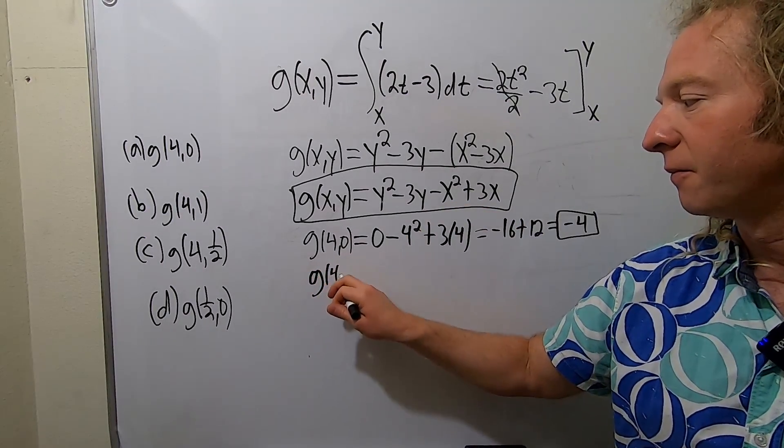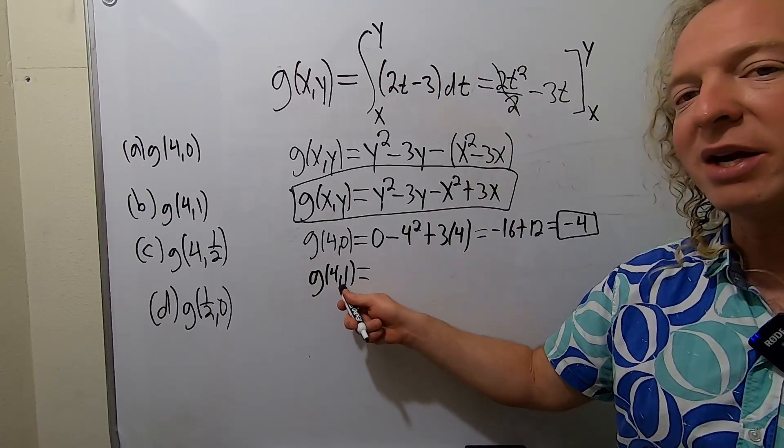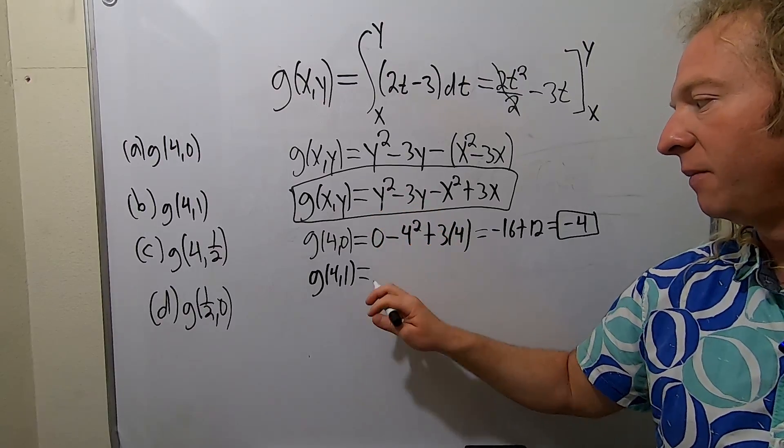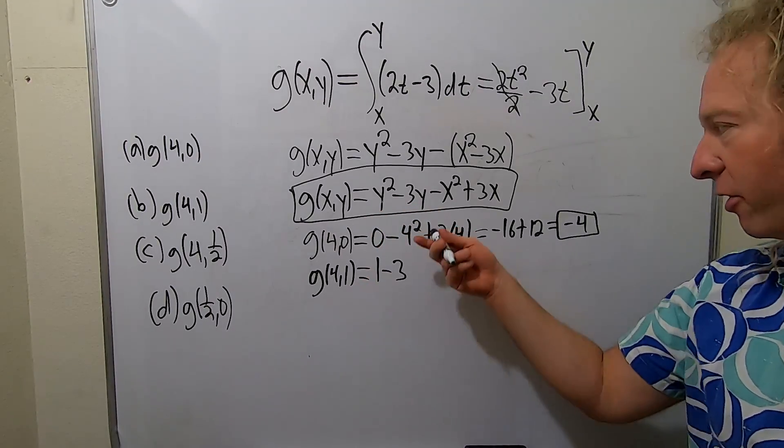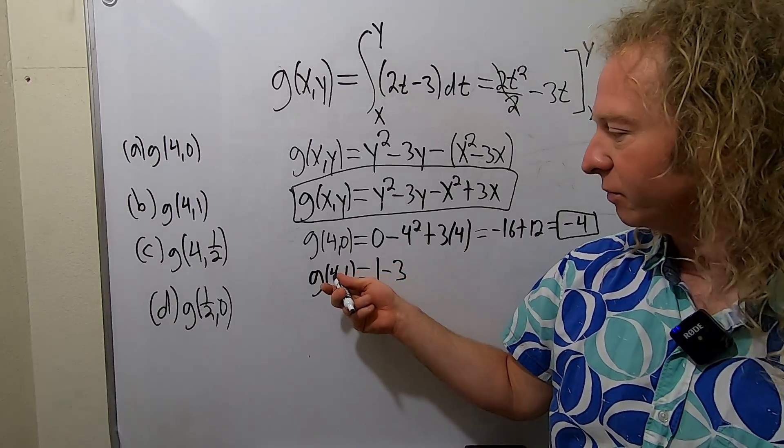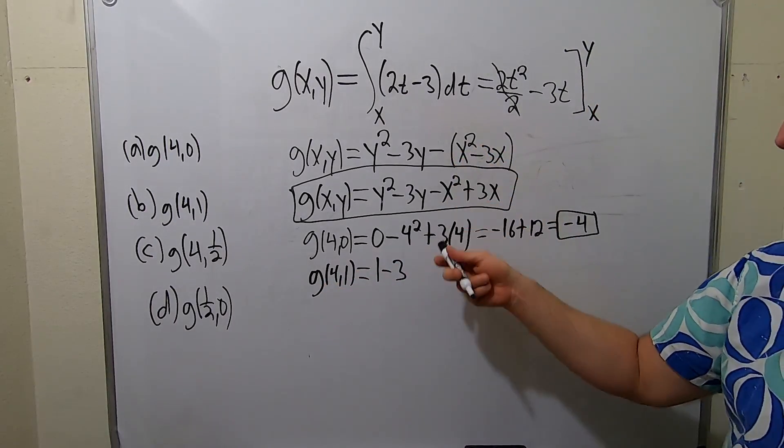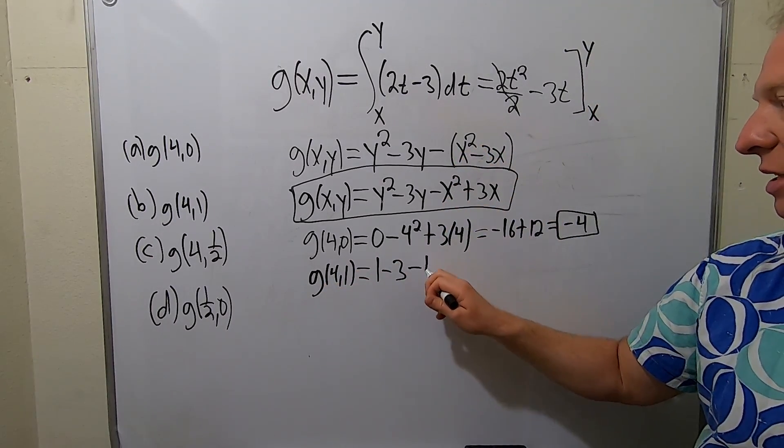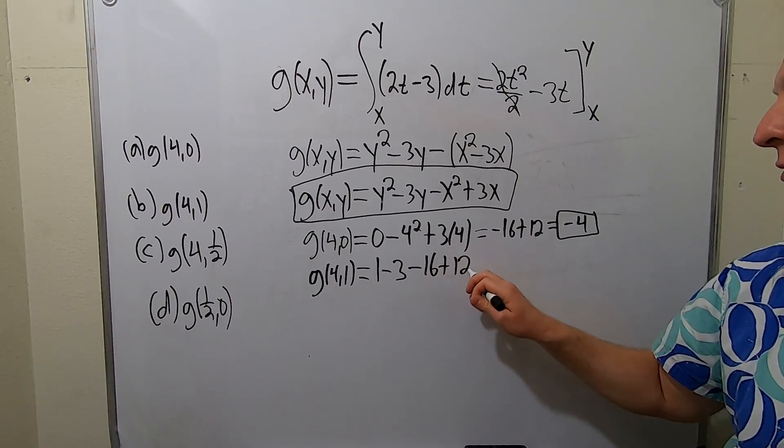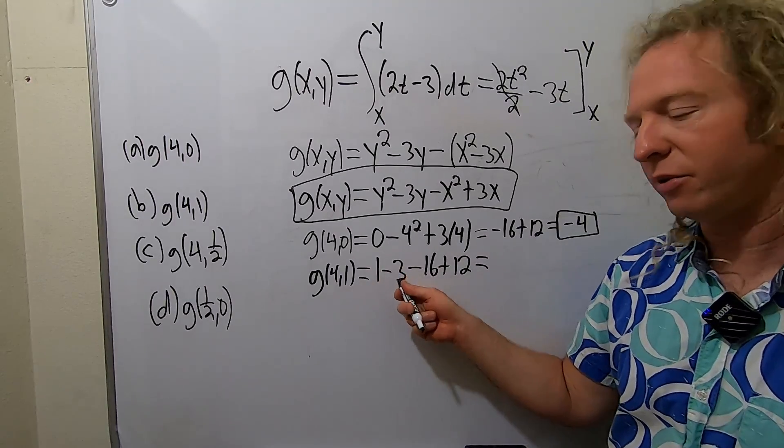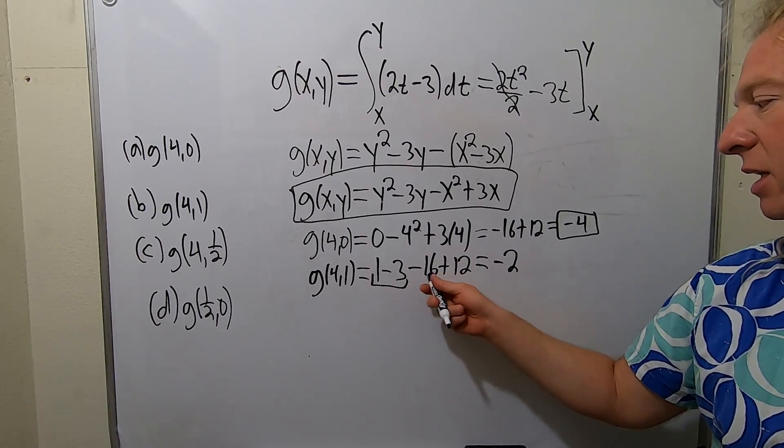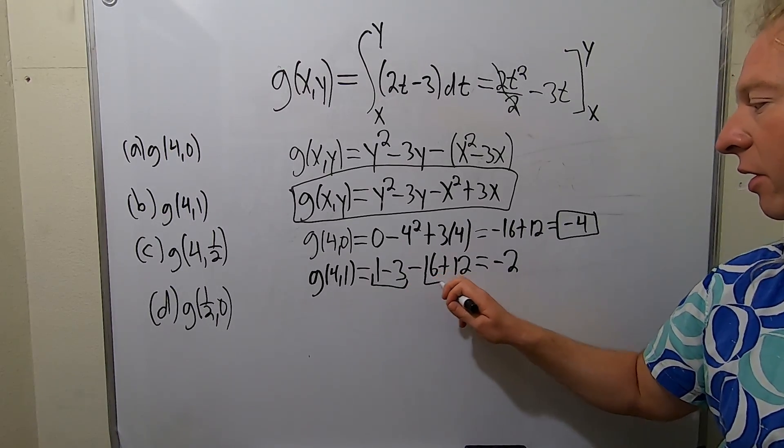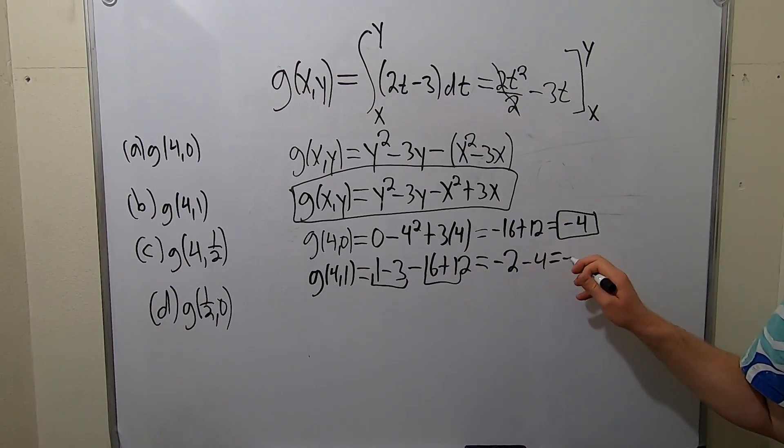g of 4, 1. Again your y is 1, so you get 1 minus 3. As before, your x is 4. It'd be easier to plug it in here but I'll stick to this. Minus 16 plus 12 just like before. So this is negative 2. Combining these gives you negative 2, combining these gives you negative 4. So we get negative 6. Two down, let's keep going.